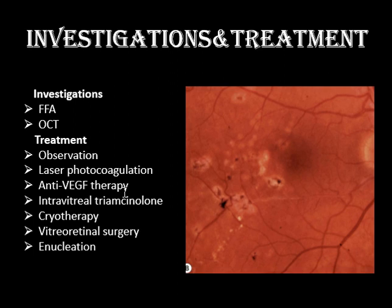If not responding to anti-VEGF, we can give intravitreal triamcinolone as a long-acting steroid. Cryotherapy is used when the disease is at the periphery and laser cannot be performed due to impaired fundal view from cataract or hazy vitreous. If nothing works and the patient has TRD, we perform vitreoretinal surgery. If we cannot help the patient, enucleation — removal of the eyeball — is the last resort. This concludes the topic of retinal vascular disease; the next lecture will cover the macula, inshallah.